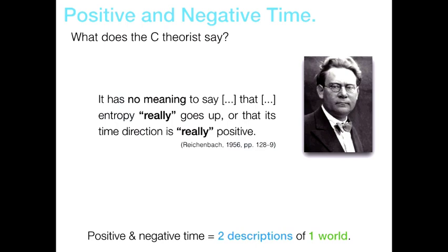So we can think of positive and negative time as giving two equivalent but superficially different descriptions of one and the same world. On this view, if we ask could this world really happen backwards in time, the answer is no — because when we describe it from future to past we're describing the same world. Reichenbach says it has no meaning to say that entropy really goes up or that the time direction is really positive — in a sense these are conventions, but what he means by conventions is quite important.